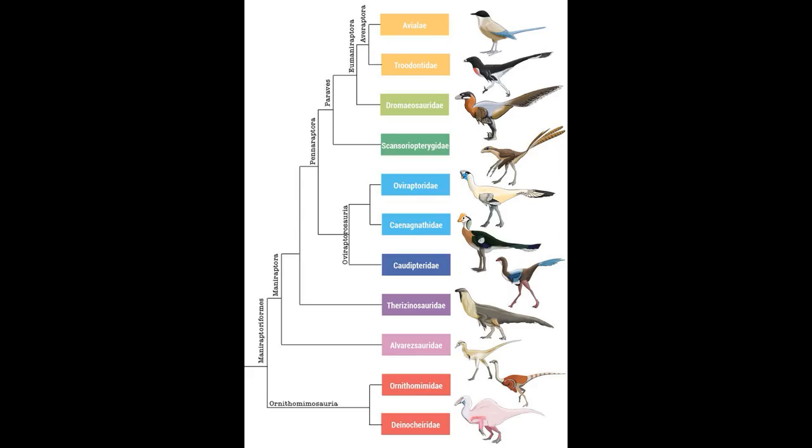The evolution of birds from earlier theropods is backed by mountains of evidence. We can see the step-by-step evolution of characters in the fossil record, and researchers can work out what genes were at play in a number of cases. Remember that this series started out in the Permian with small lizard-like amniotes. We progressed through the different dinosaur clades and ended up at the modern dinosaurs — the birds. Thanks for watching, and I'll see you next time.